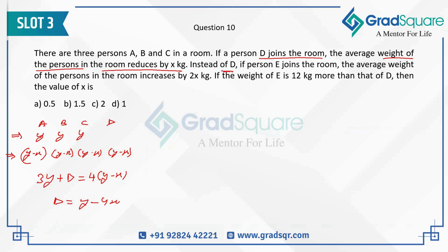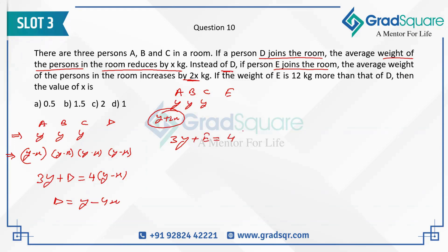Now, instead of D, if E joins the room — so now we have A, B, C and E — then the average weight of the persons in the room increases by two X. So earlier, if the average was Y, now it will increase and become Y plus two X as the average of these four individuals. So three Y plus the weight of E equals four times of Y plus two X. The weight of E is Y plus eight X. This is the weight of E.